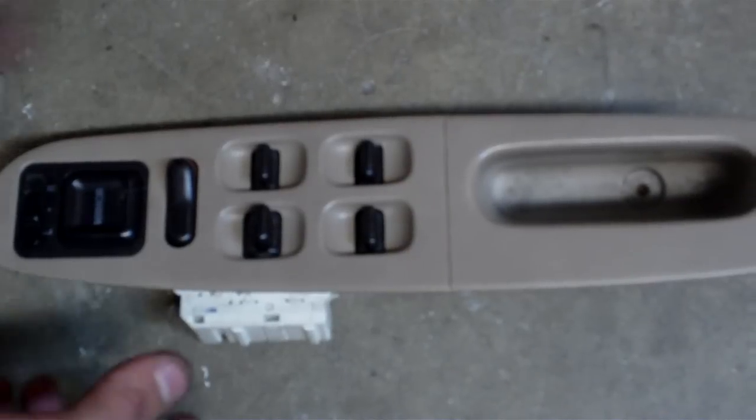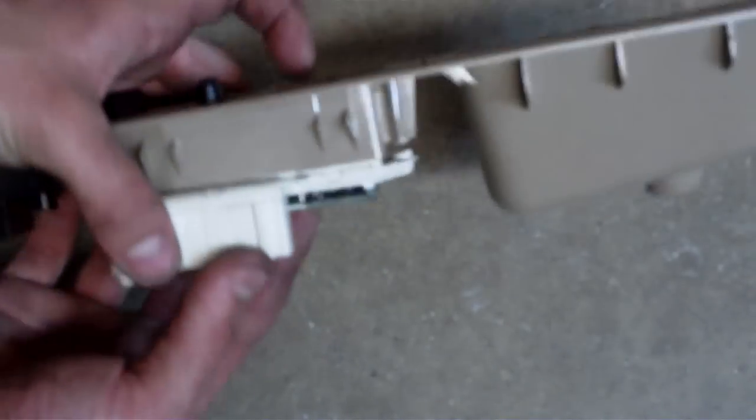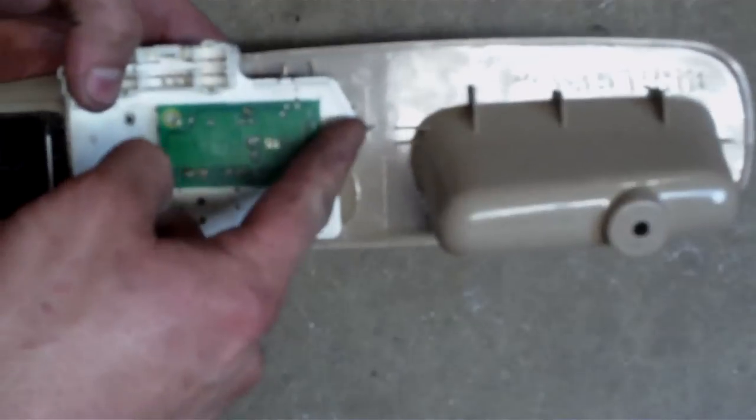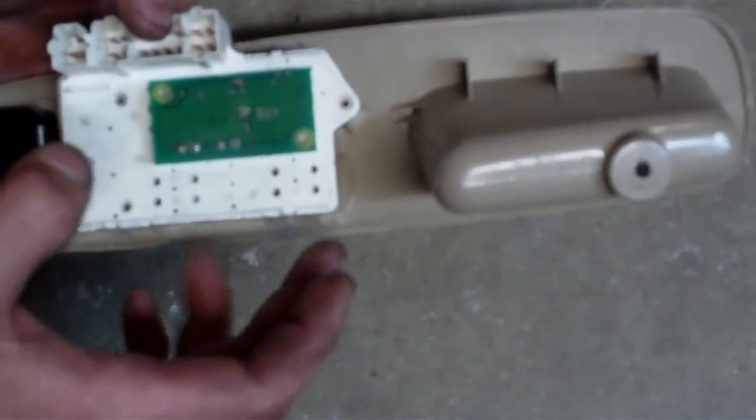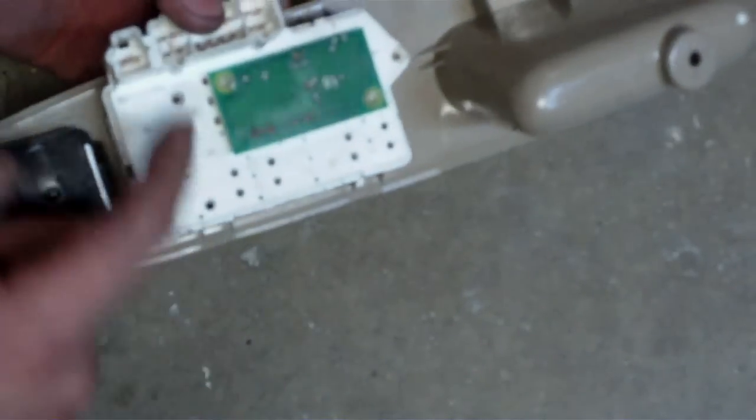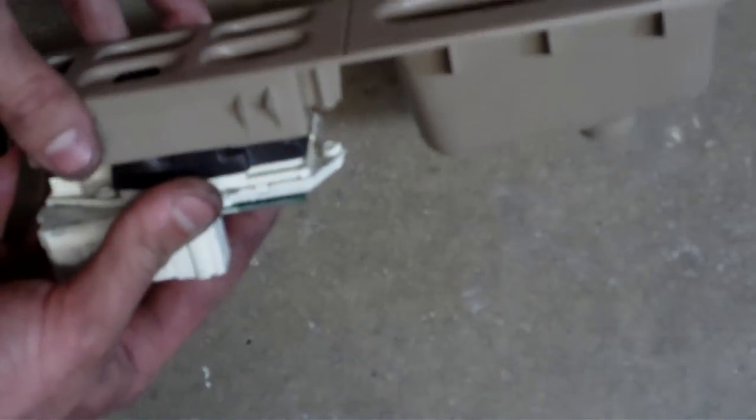Okay, so first things first, you're going to flip the console upside down. You're going to take out these three screws right here - one, two, and three. And then after that, it's going to come apart like this.